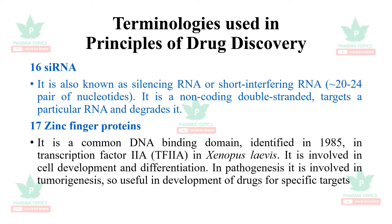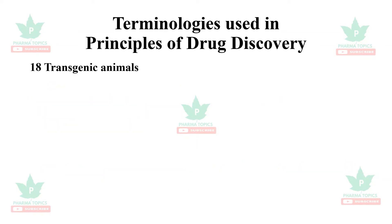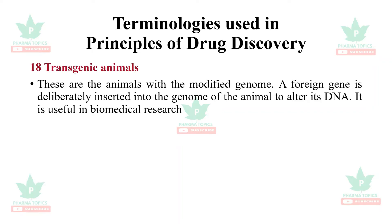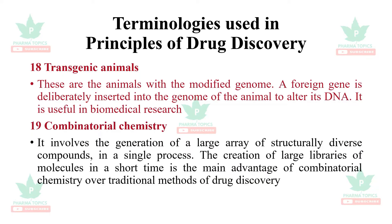Next is transgenic animals. These are animals with a modified genome — a foreign gene is deliberately inserted into the genome of the animal to alter its DNA. It is useful in biomedical research. Combinatorial chemistry involves generation of large arrays of structurally diverse compounds in a single process. The creation of large libraries of molecules in a short time is the main advantage over traditional methods of drug discovery.